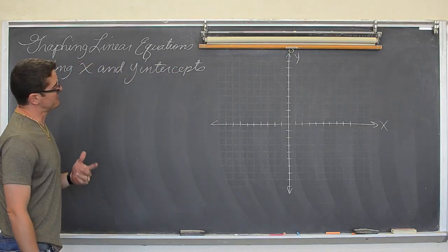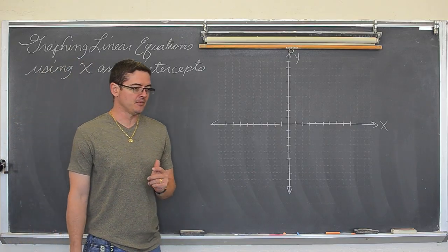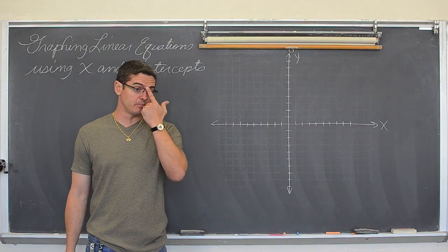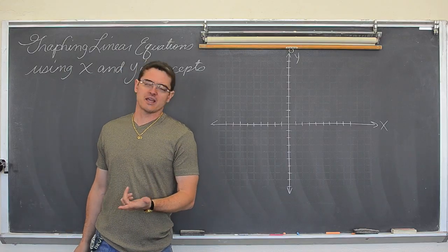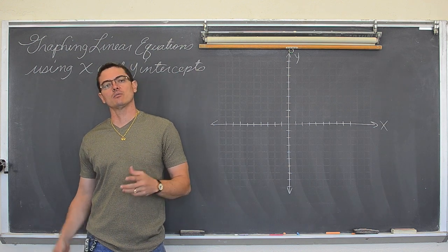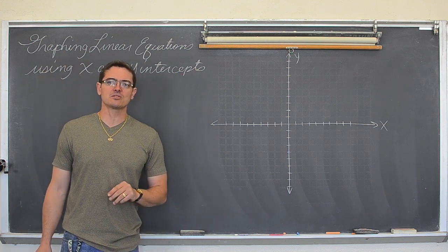We are going to do it now instead of using slope intercept form which is y equals mx plus b, a really nice form because we can draw a graph just by looking at the equation. But what if we have an equation in standard form and we don't feel like setting it equal to y? Of course your teacher just says, hey, I want you to graph using x and y intercepts.